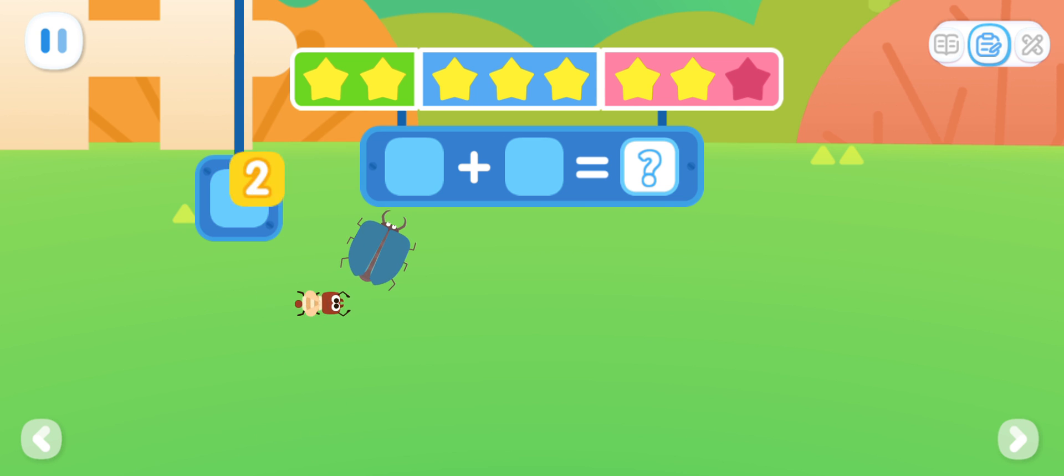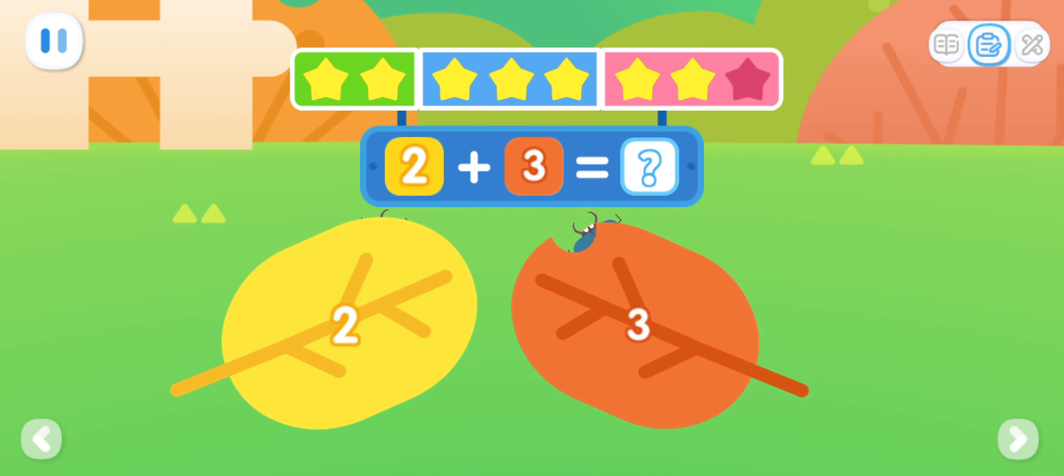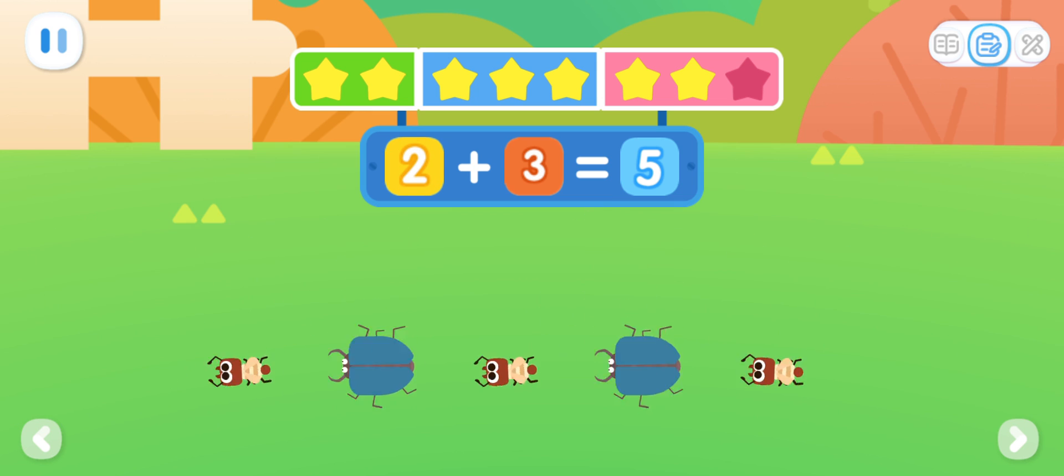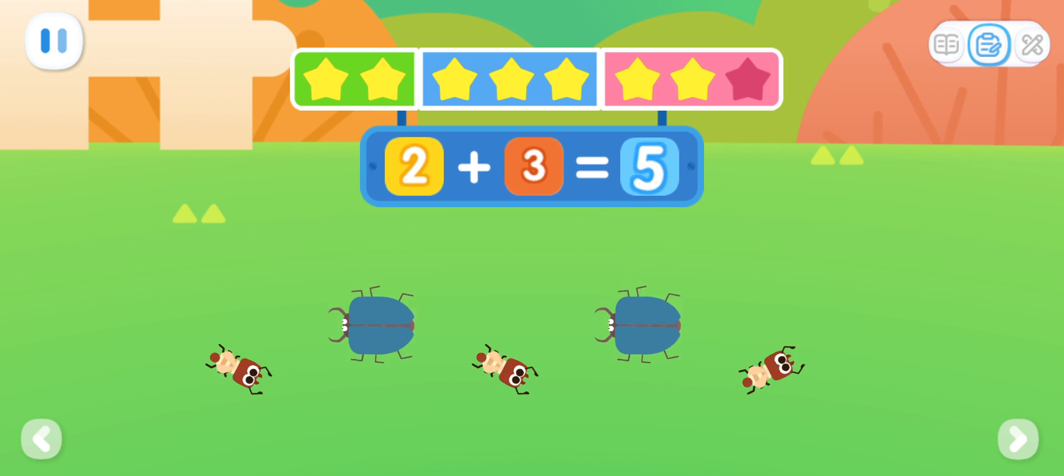There are two insects under the yellow leaf. There are three insects under the orange leaf. How many insects are there in total? You've got it! Two plus three equals five.